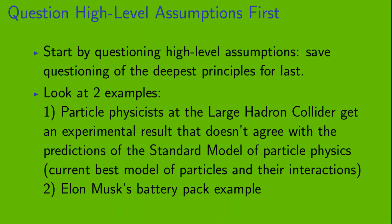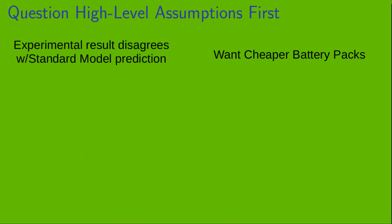And, in case you don't know what that is, the standard model is basically our current best model of particles and their interactions. And our second example is going to be Elon Musk's battery pack example. Let's look at each of those two examples. We'll start with example one, where the experimental result at LHC disagrees with the standard model prediction.